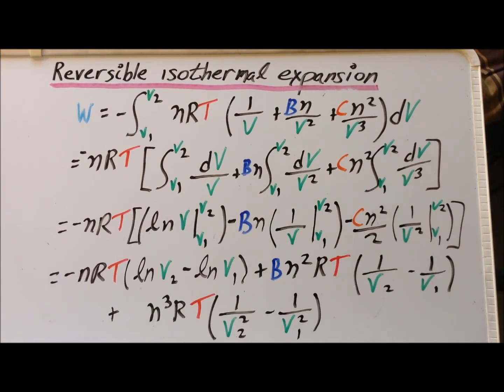Finally, evaluating at the limits and being careful of the various constants, we get that the work of reversible isothermal expansion for a gas satisfying the Virial equation is minus nRT times the quantity natural log of V2 minus natural log of V1, plus Bn squared RT times one over V2 minus one over V1, plus Cn cubed RT times one over V2 squared minus one over V1 squared.